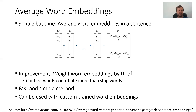This is a fast and simple method, and it can also be used with custom trained word embeddings. The disadvantage of this approach is that it does not preserve the word order, and it also cannot deal with ambiguous words.